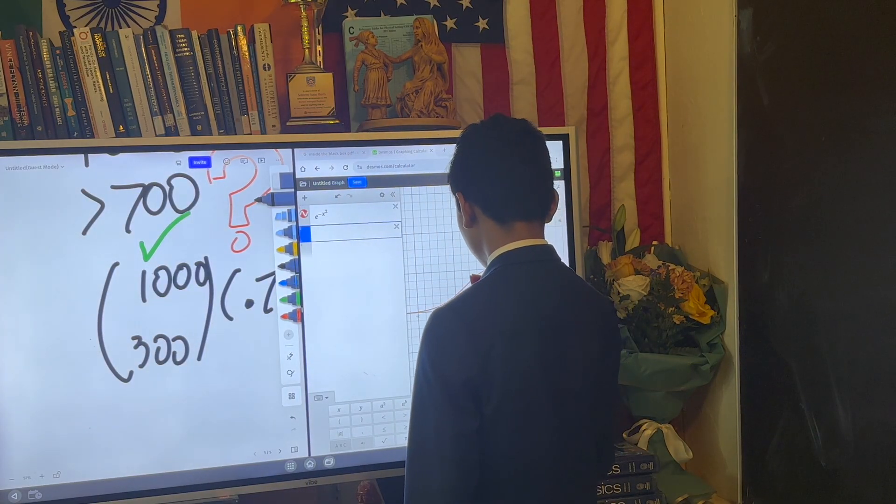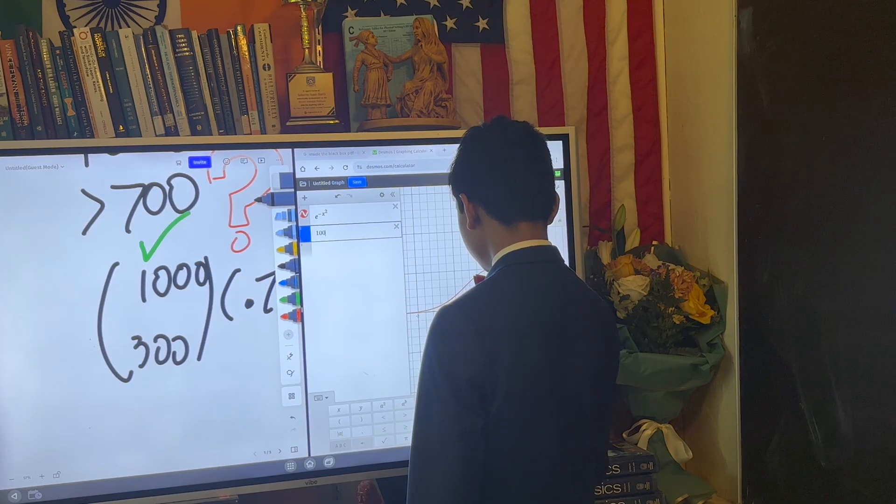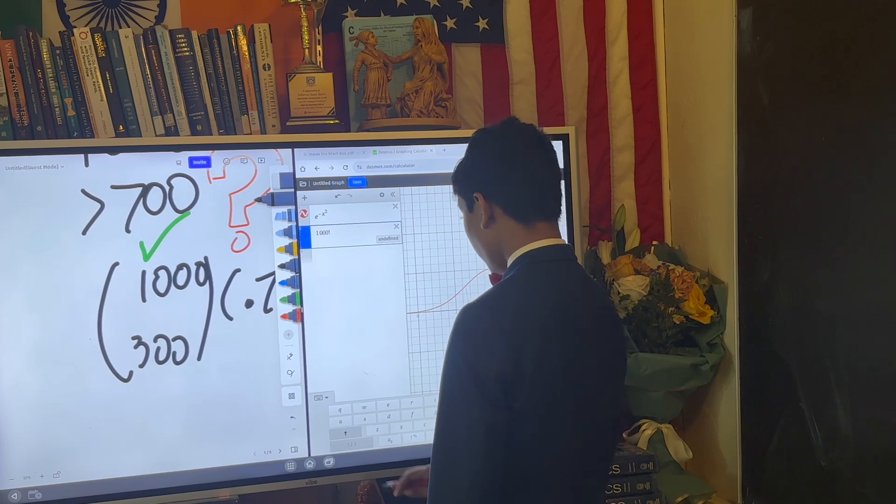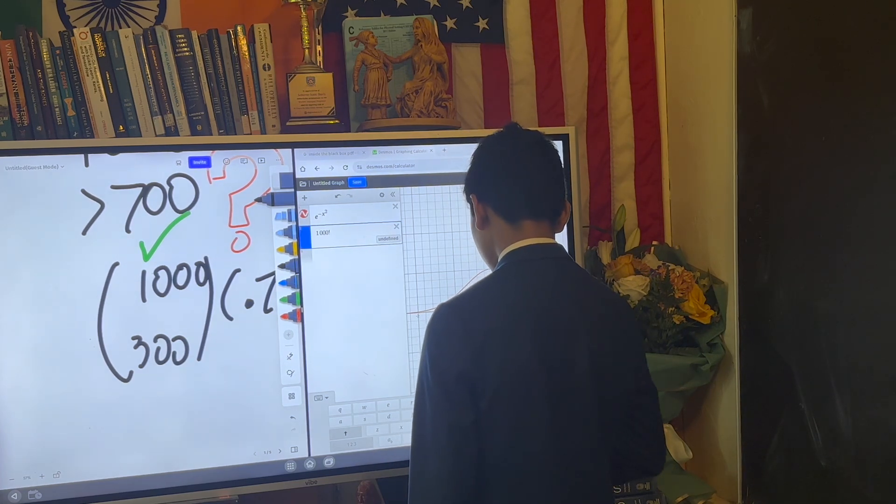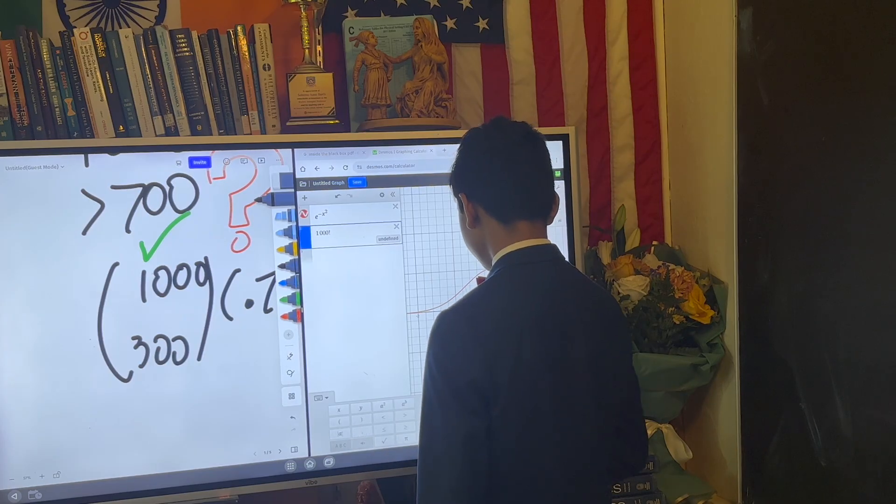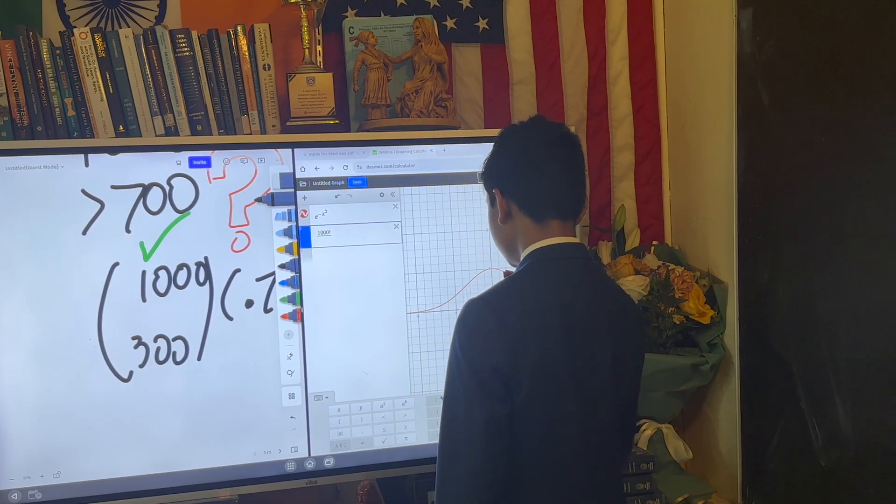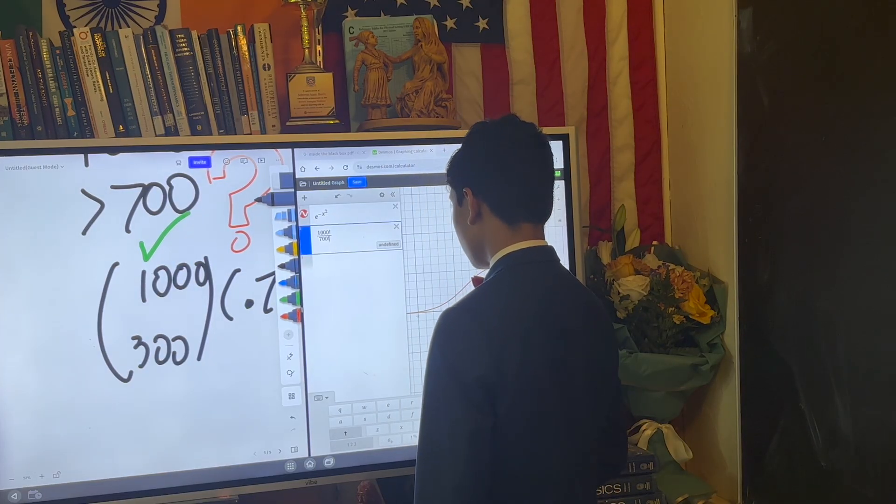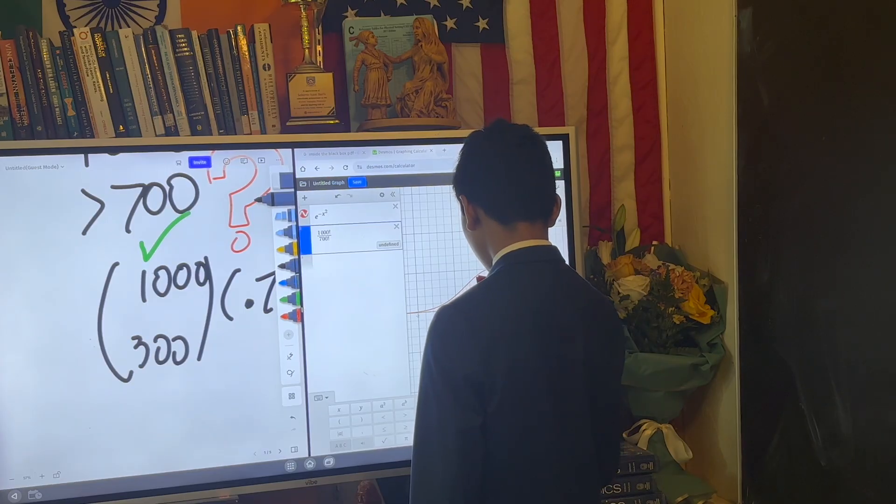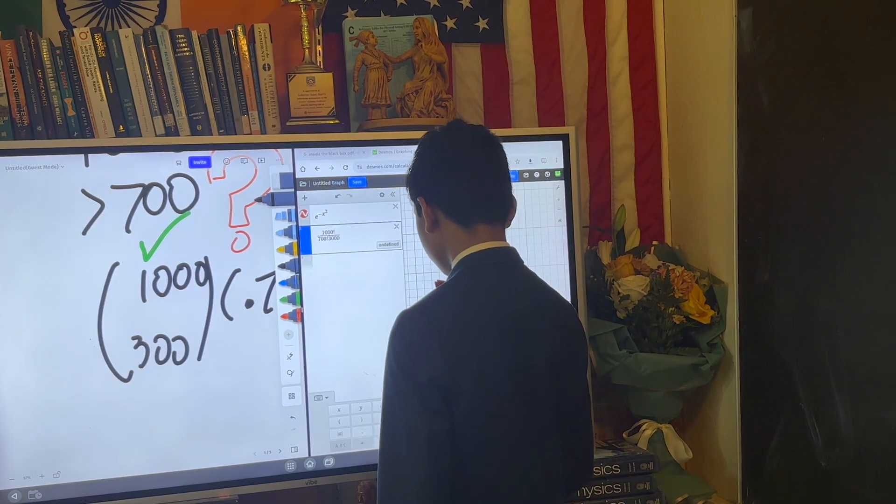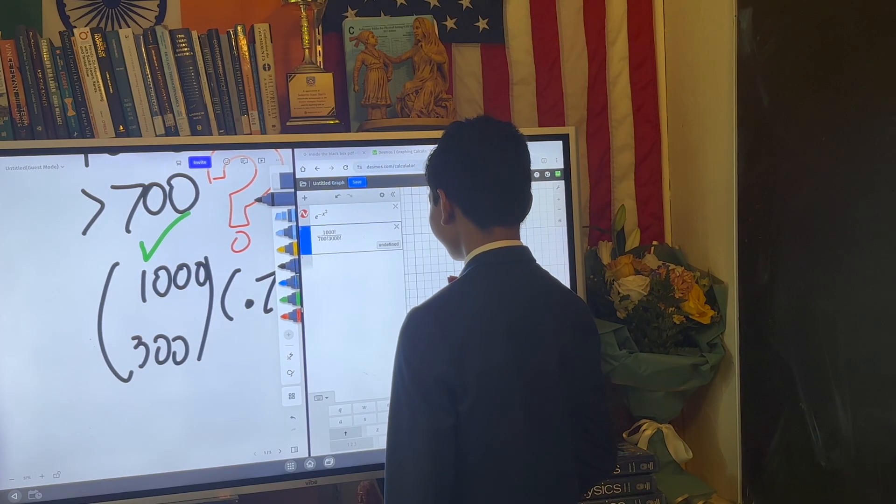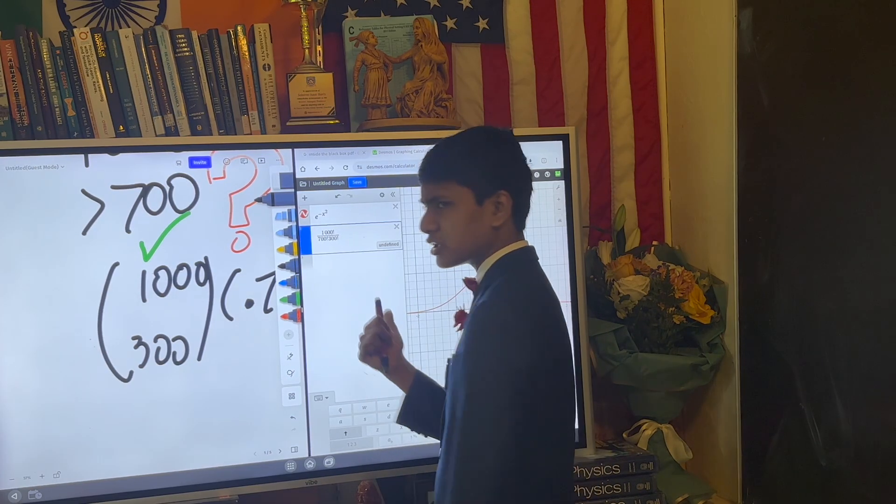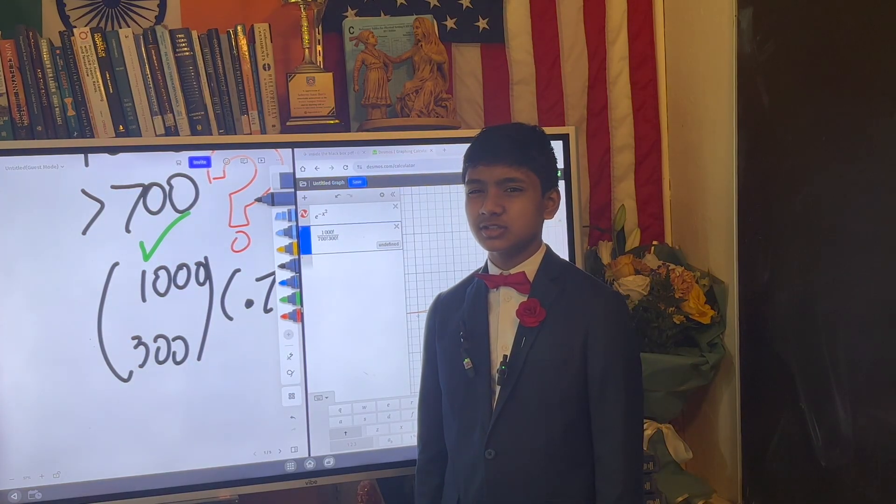Well, it's just 1,000 factorial. Does this calculator even have a factorial sign? Yes, it does. Undefined, okay, that's not a good sign. But what happens if we divide? Divided by 700 factorial. Okay, still undefined. 300 factorial. Oh, that says 3,000. Still undefined. Yeah, I don't think this is going to do us much good.